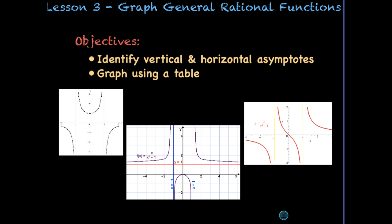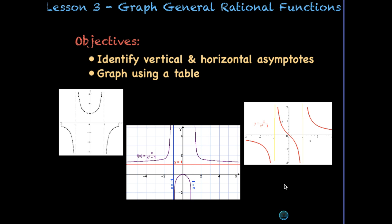Similar to the simple rational function, if we can find the vertical and horizontal asymptotes and then make a table of values, these will be easy to graph. Here are some examples of the different forms of this function that you might see while graphing.